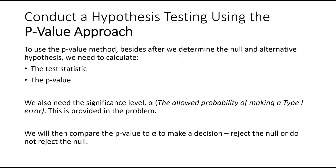To use the p-value approach, first we determine the null and alternative hypothesis, which we covered in the previous videos. Next, we're going to calculate the test statistic and the p-value, which we'll cover in this video. We also need the significance level, which they provide us, and then we're going to compare the p-value to the significance level to make a decision to reject the null or not reject the null.